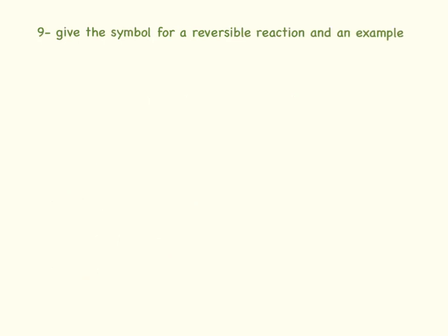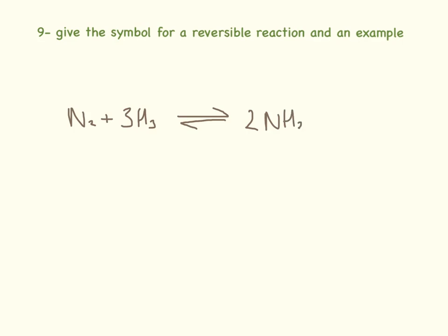So the symbol for a reversible reaction simply looks like this. There are a number of examples you could have given, but the most common example in C3 is the example of ammonia production.